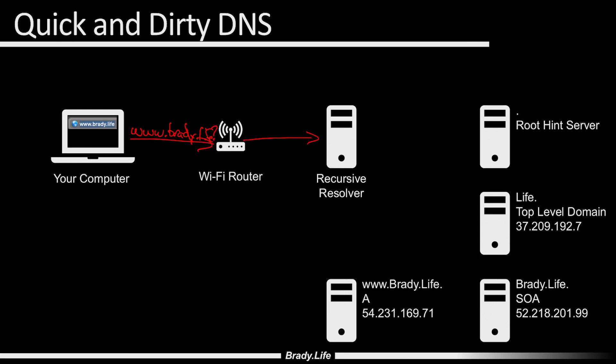So that recursive resolver is going to work its way down the chain. It's going to start with a root hint server and ask: hey root hint server, who is .life? I don't know that top-level domain. And the root hint server is going to respond back and say: hey, the .life top-level domain is at 37.209.192.7. The recursive resolver is going to say thanks and cache that record for the top-level domain.